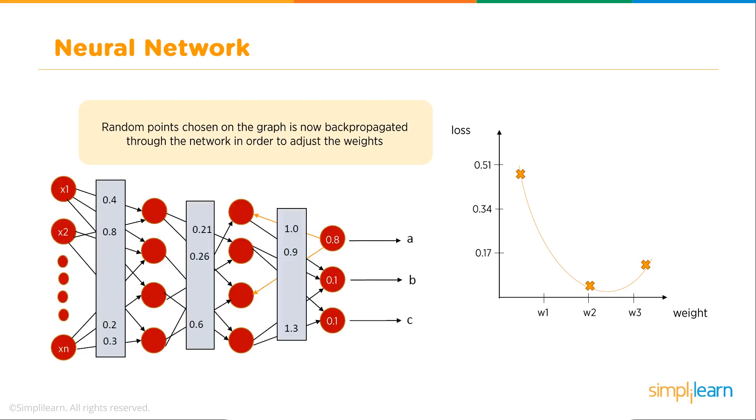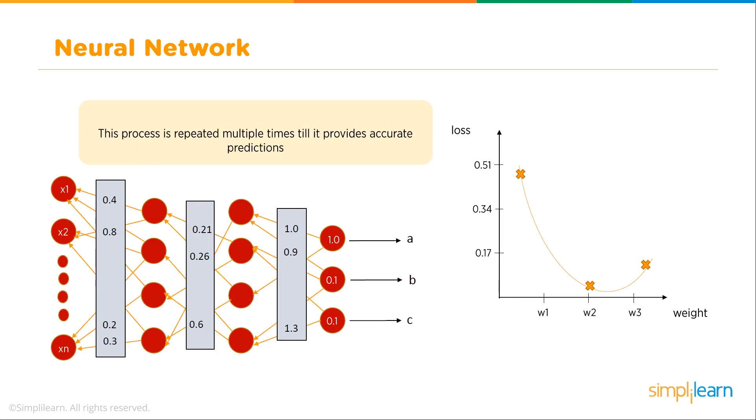I like that on this graph they show that the curve doesn't rest on the x-axis where Y equals 0, because you usually don't get that. You don't get a perfect fit on anything or very rarely do you ever get a perfect fit. The random points chosen on the graph are now back propagated through the network to adjust the weights. The network is run once again with the new weights. This process is repeated multiple times until it provides accurate predictions.